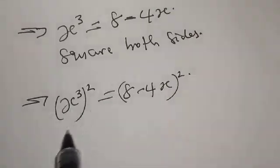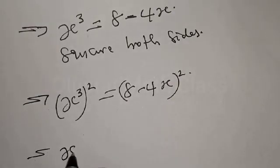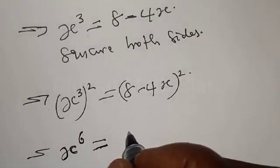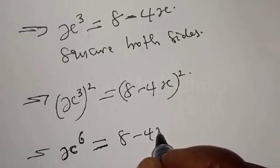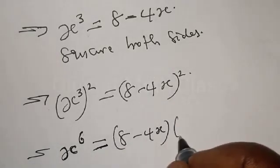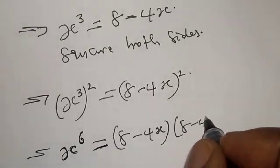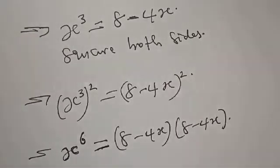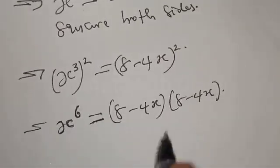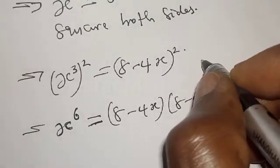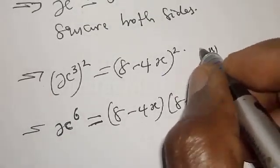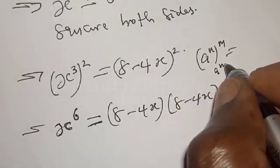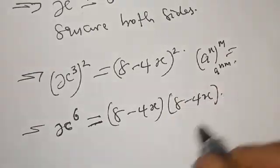Then x raised to power 3a plus 4s, squared, is equal to x raised to power 6, equal to 8 minus 4s times 8 minus 4s, that is 8 minus 4s squared. We remember that if you have a raised to power n, raised to power m, it is the same thing as a raised to power n times m.